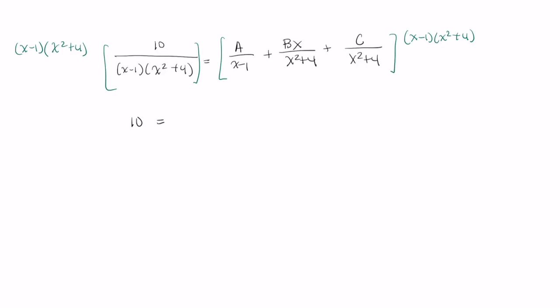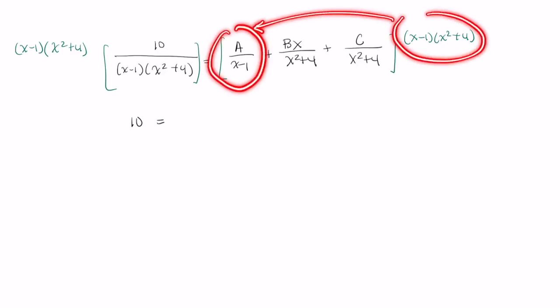On the right-hand side, we need to apply the distributive property of multiplication. And so when we multiply A times this expression here, there's an x minus 1 in this denominator and there'll be an x minus 1 in the numerator. So we'll just end up with A times x squared plus 4.